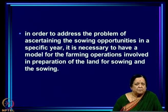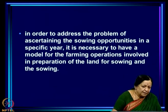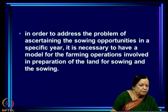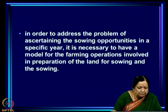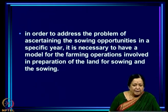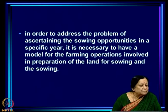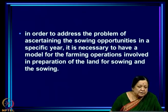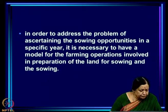To address the problem of ascertaining sowing opportunities in a specific year, we need to account for soil moisture. Sowing opportunities are decided by soil moisture only — when the soil has adequate moisture. Farmers test this by making a ball of the soil in their hand; if the soil is not wet enough, you cannot make a good ball.